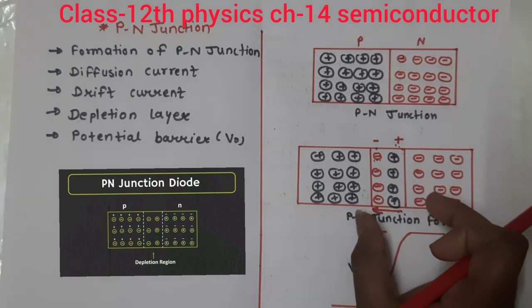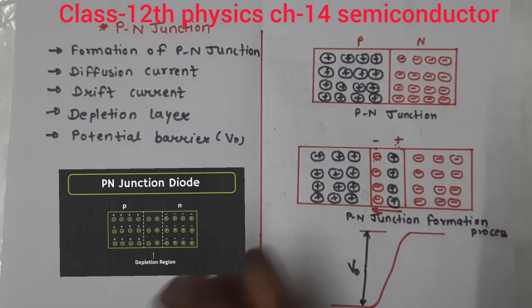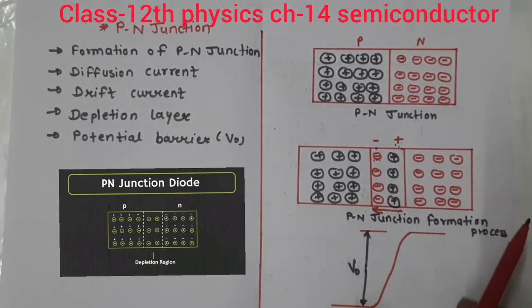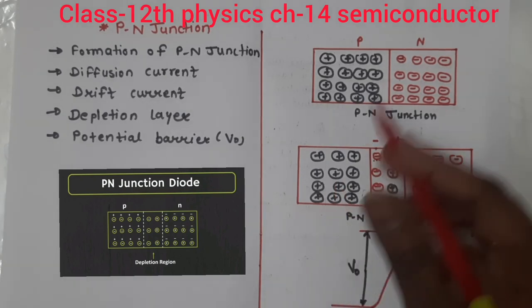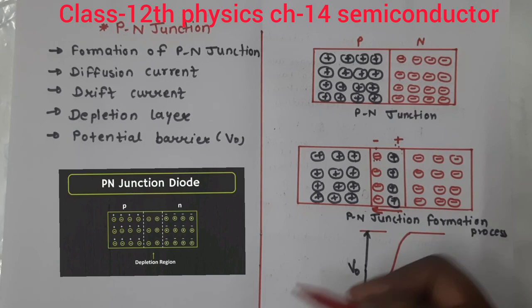At equilibrium, the diffusion current and drift current become equal. Initially, the diffusion current is greater as compared to the drift current, but gradually they balance out and reach equilibrium.